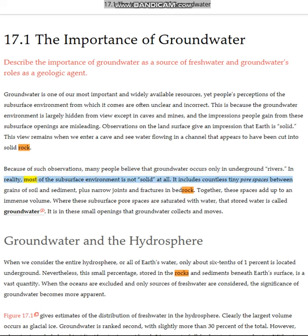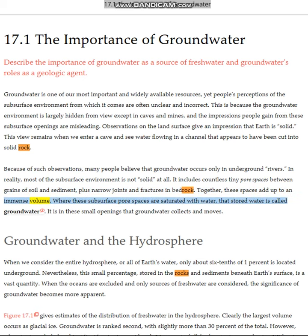In reality, most of the subsurface environment is not solid at all. It includes countless tiny pore spaces between grains of soil and sediment, plus narrow joints and fractures in bedrock. Together, these spaces add up to an immense volume. Where these subsurface pore spaces are saturated with water, that stored water is called groundwater. It is in these small openings that groundwater collects and moves.